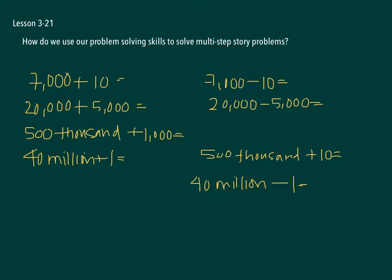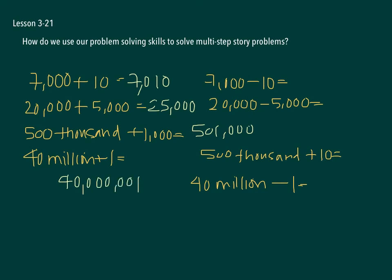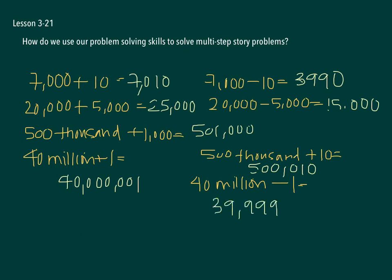All right, let's fill in the answers. The first answer should be 7,010. The next one should be 25,000. Here we're going to have 501,000. You're going to have 40,000,001. You're going to have — let's see — 7,000 minus 10: you're going to have 6,990. 20,000 less 5,000: you're going to have 15,000. 500,000 plus 10: you're going to have 500,010. And 40,000,000 less 1: you're going to have 39,999,999.